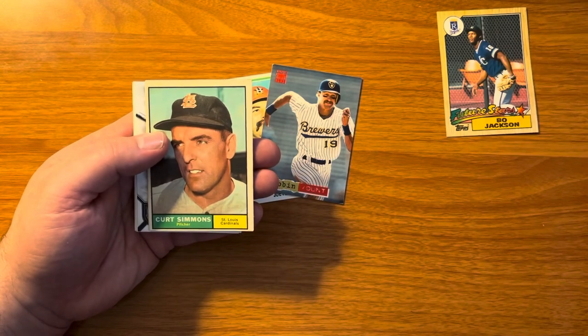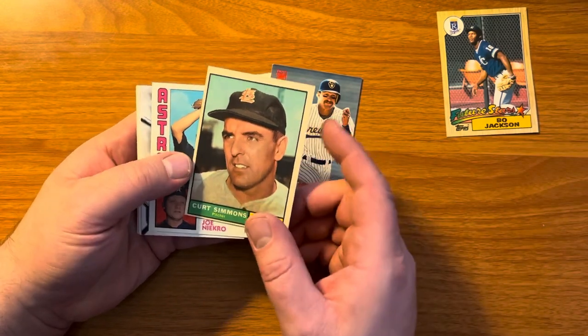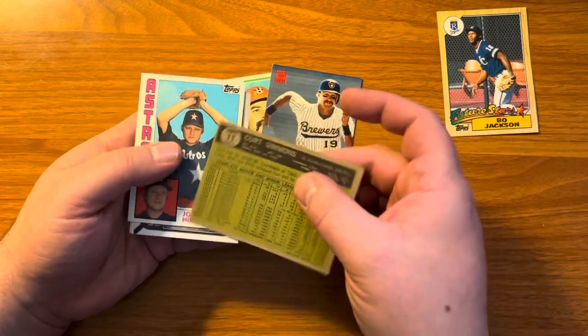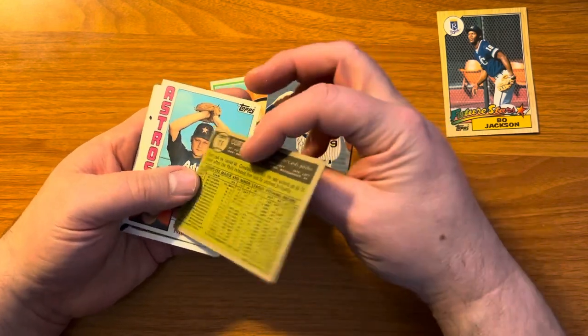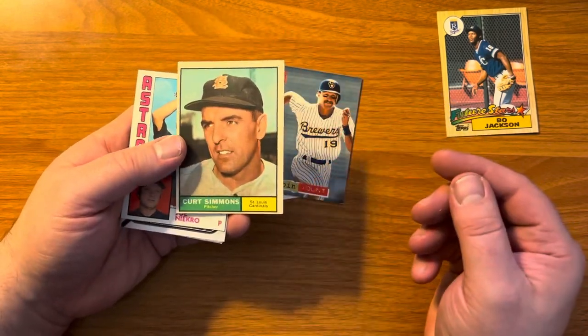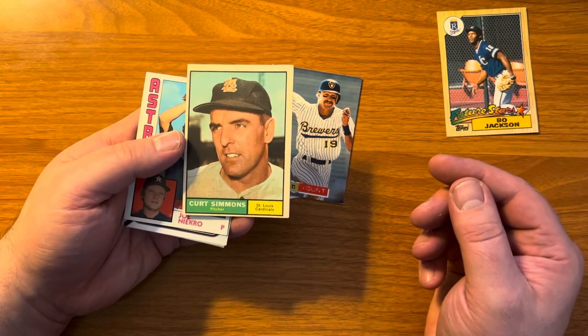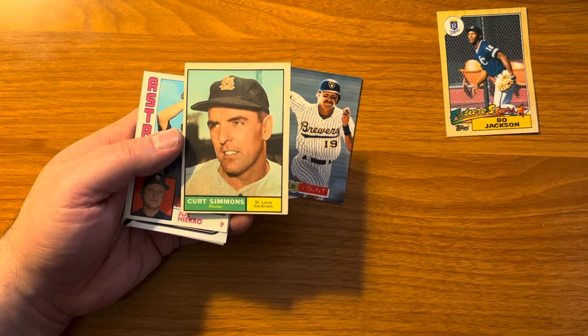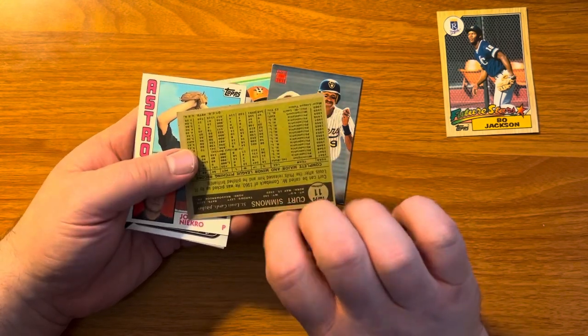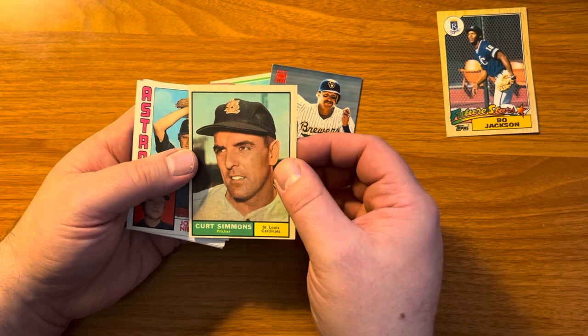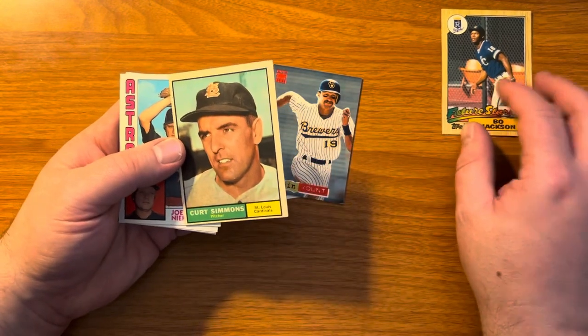Oh, here we go. Curt Simmons. This is 61, I believe. Yeah, looks like 1961. Love getting cards like this. Eventually, you buy enough boxes of these, you get the complete set. So, Curt Simmons. There we go. It's in decent shape for 1961. I mean, jeez. How old is the card?